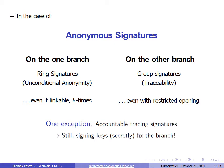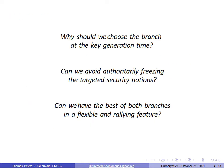A notable exception where both branches really coexist is in accountable tracing signatures. However, the user receives a single signing key which fixes the branch without being aware of which. This raises questions: Why should we choose the branch at the key generation time? Can we avoid authoritatively freezing the targeted security notions, or can we have the best of both branches in a flexible and rallying feature?